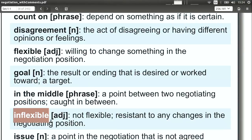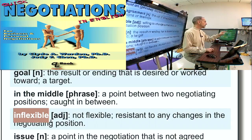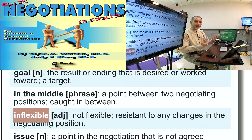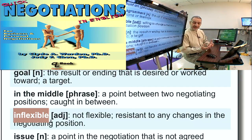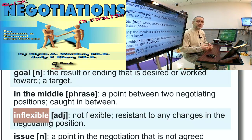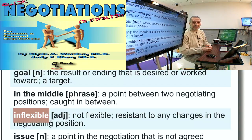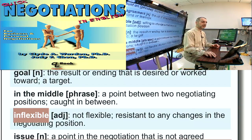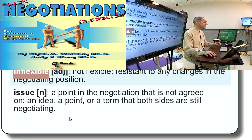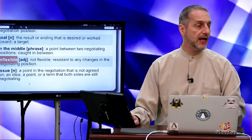Inflexible means no flexibility — it's the opposite of flexible. Usually you would not say this about yourself; you would say it about the other side: you are being inflexible. Meaning you're not flexible, you're not giving up anything in this negotiation. This word is usually a way to show that the other side is not being helpful or not changing.